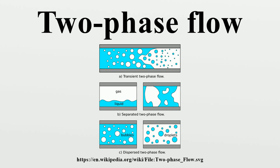In fluid mechanics, two-phase flow is a flow of gas and liquid, usually in a pipe. Two-phase flow is a particular example of multi-phase flow, and it can occur in various forms. For example, there are transient flows with a transition from pure liquid to a vapor flow as a result of external heating, separated flows, and dispersed two-phase flows where one phase is present in the form of particles, droplets, or bubbles in a continuous carrier phase.